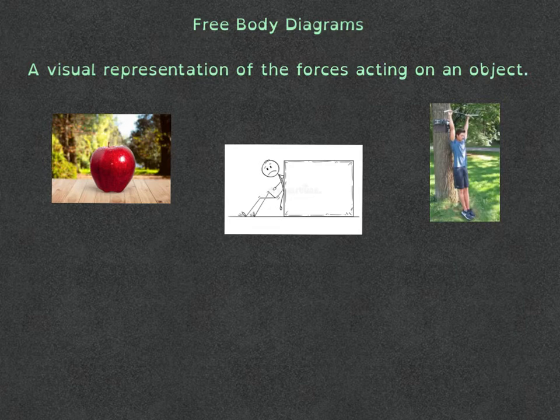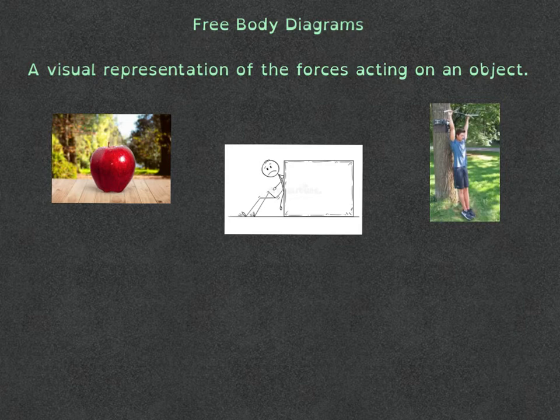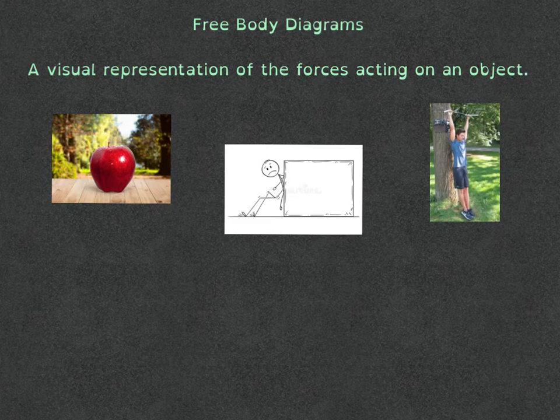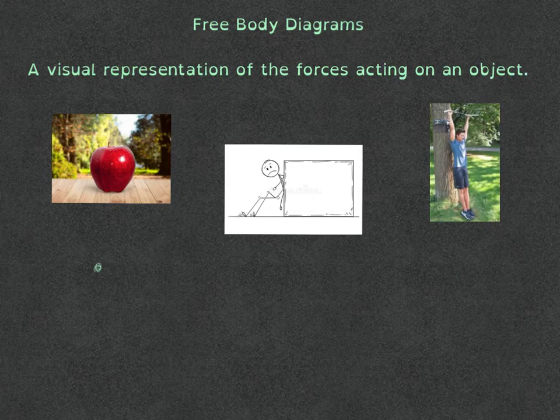So I think the best way to go about this is just to go through some examples. So first example here, we have an apple sitting on a table. So to draw a proper free body diagram, you can either use a little box. I often like to use just a dot. So we'll represent the apple here as a dot.